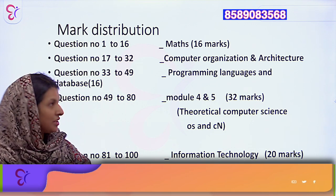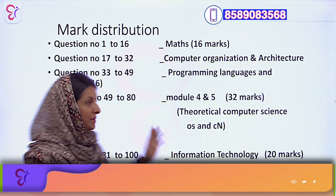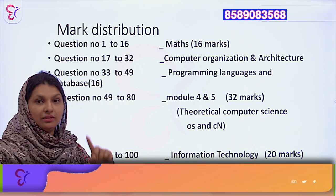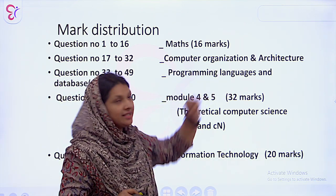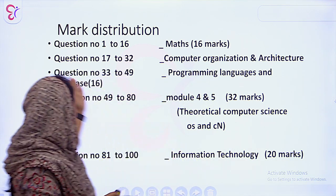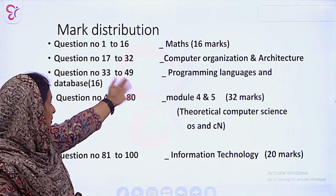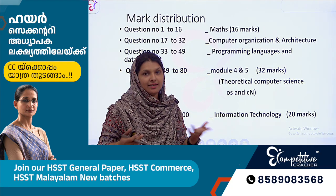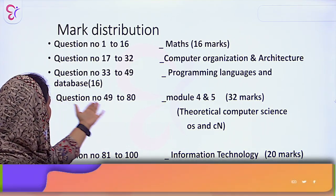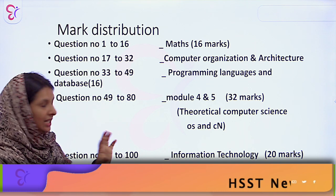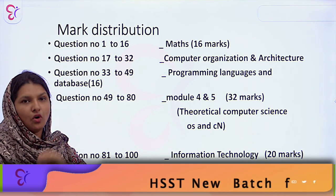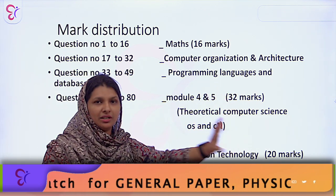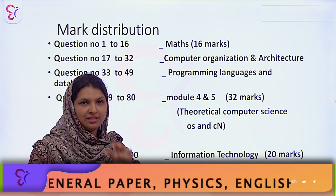Then questions 1 to 16 — what qualifications should they have? Questions number 17 to 32, which is Computer Organization and Architecture. Then what is the question 33 to 49? The third module is Programming Languages and Databases. Then questions 49 to 80 — that is the two modules combined. Modules 4 and 5 are 32 questions, the same as 16 marks each.